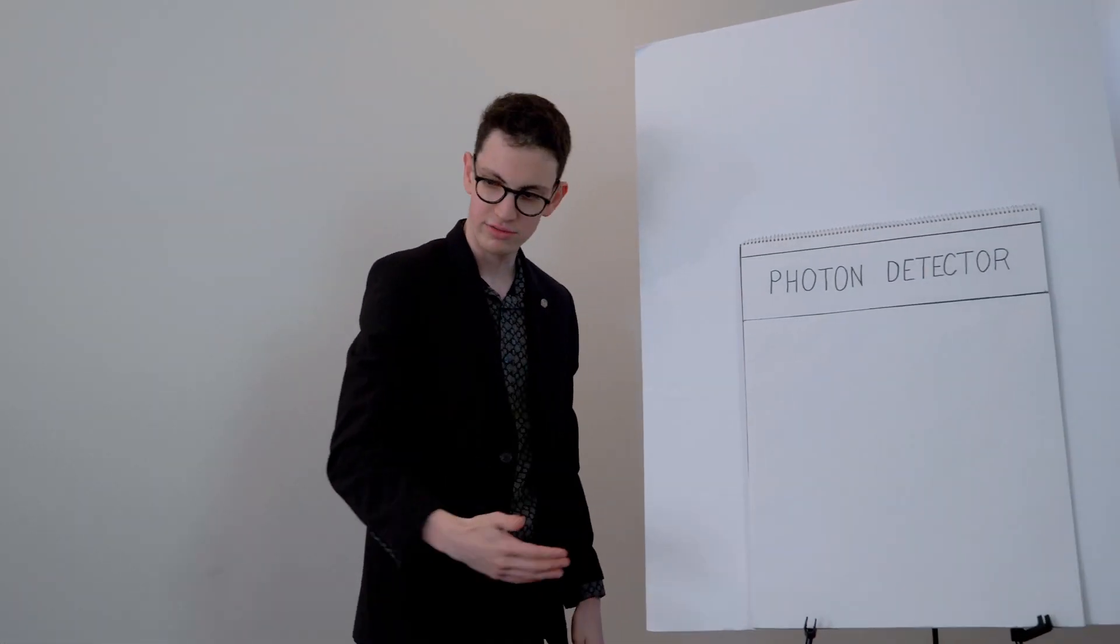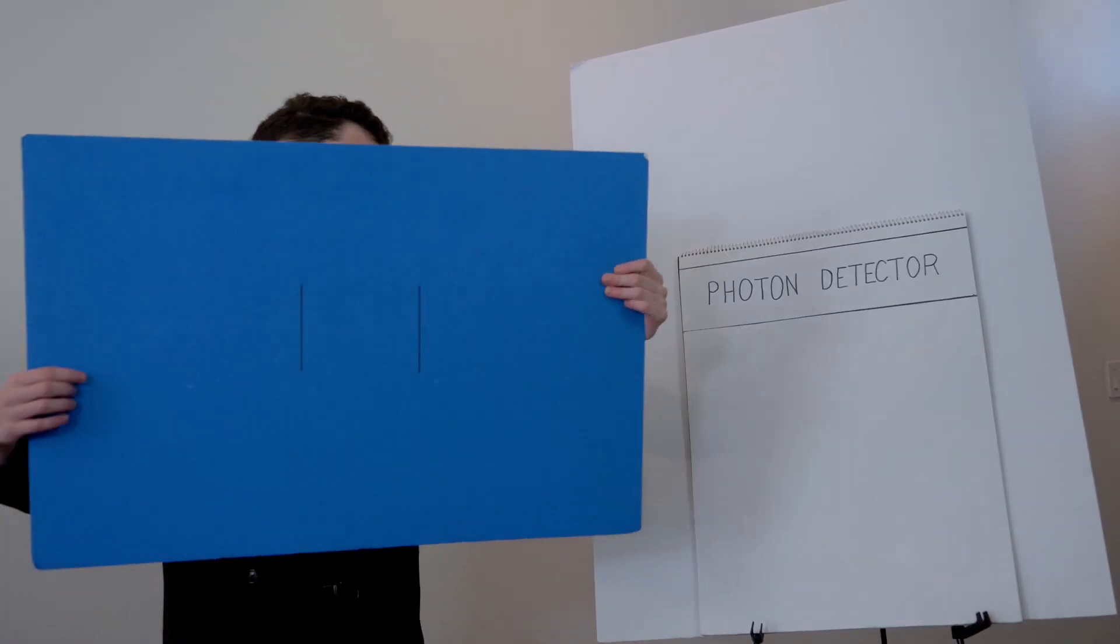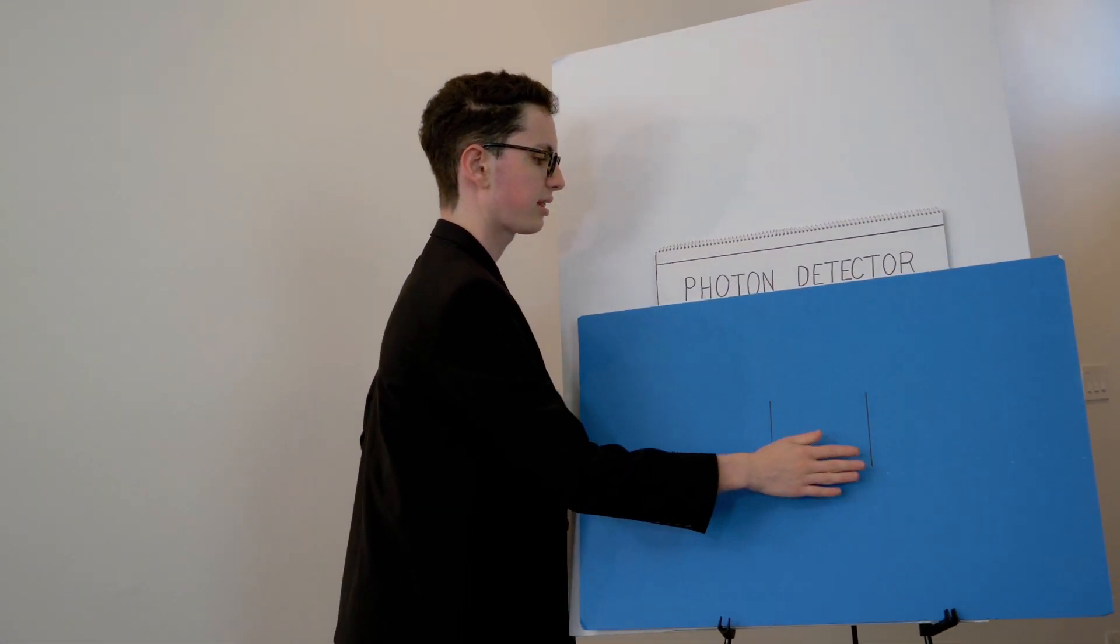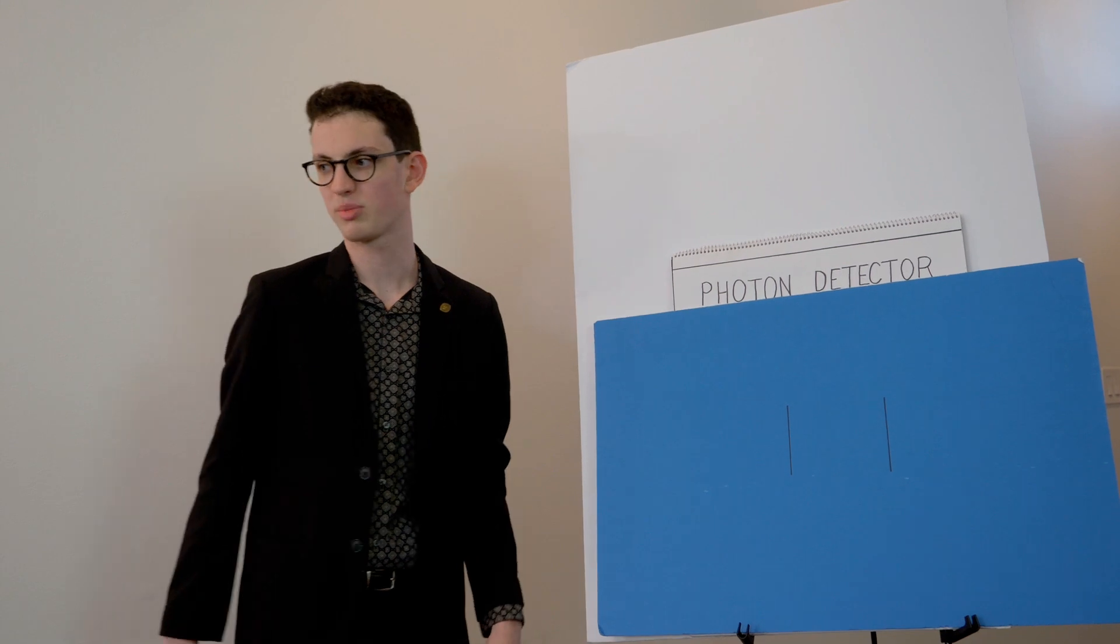We know this because of an experiment first performed in 1801 and refined many times since: the double slit experiment. Scientists took a photon detector and placed the screen in front of it with two slits, hence the name double slit experiment.